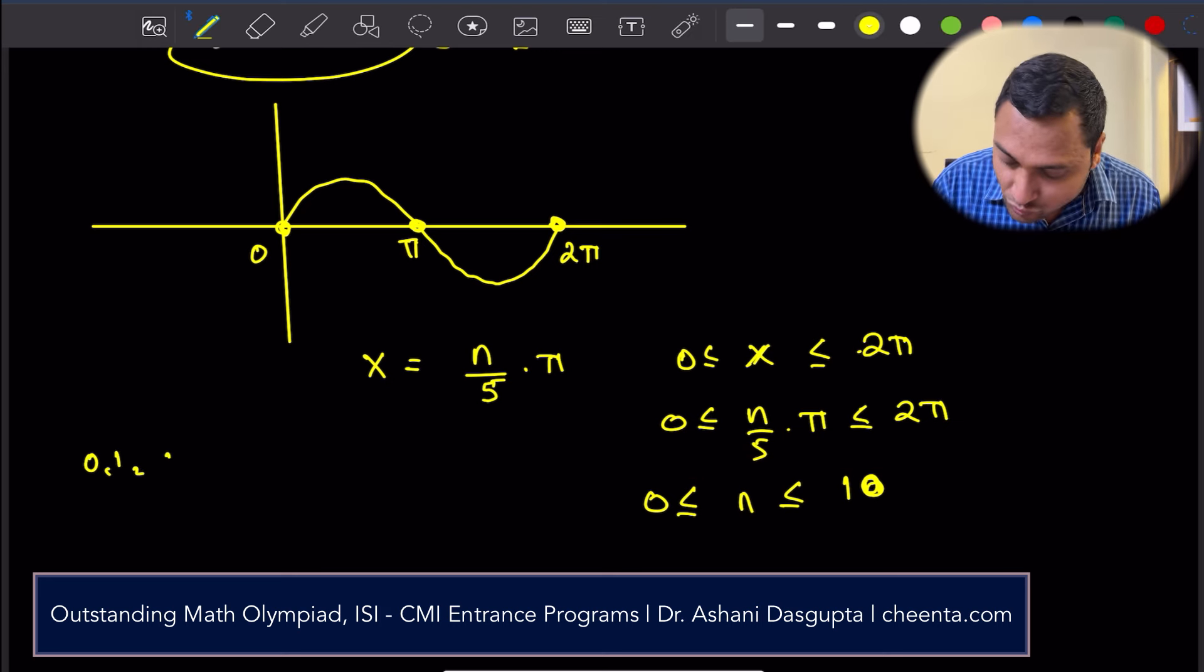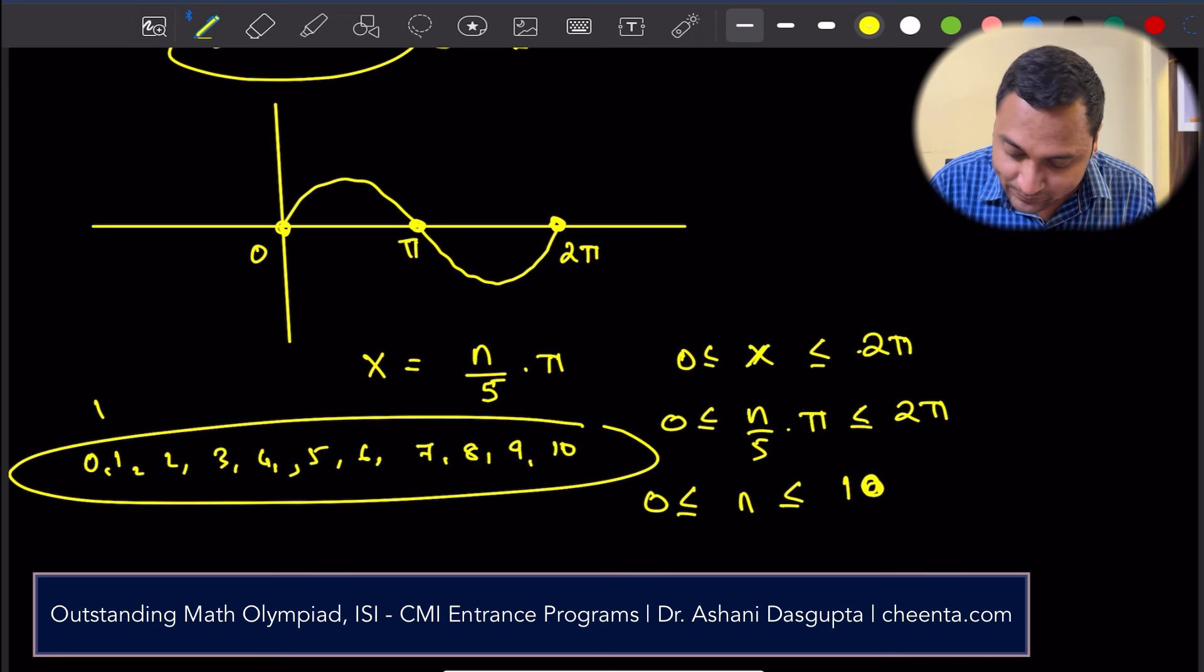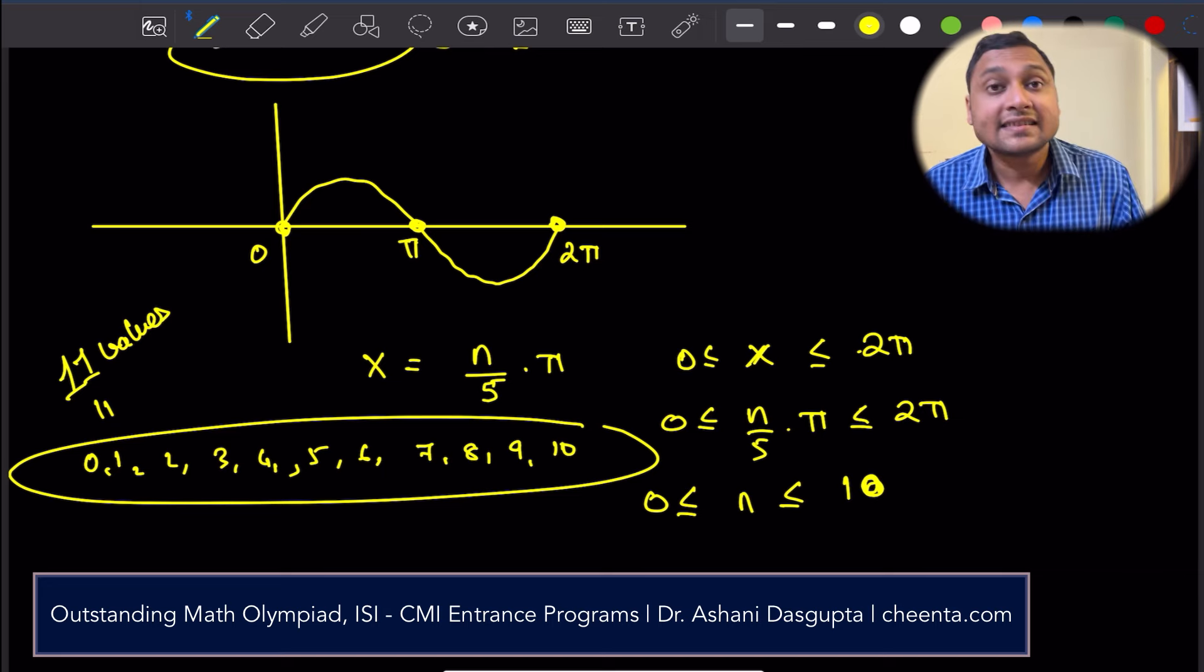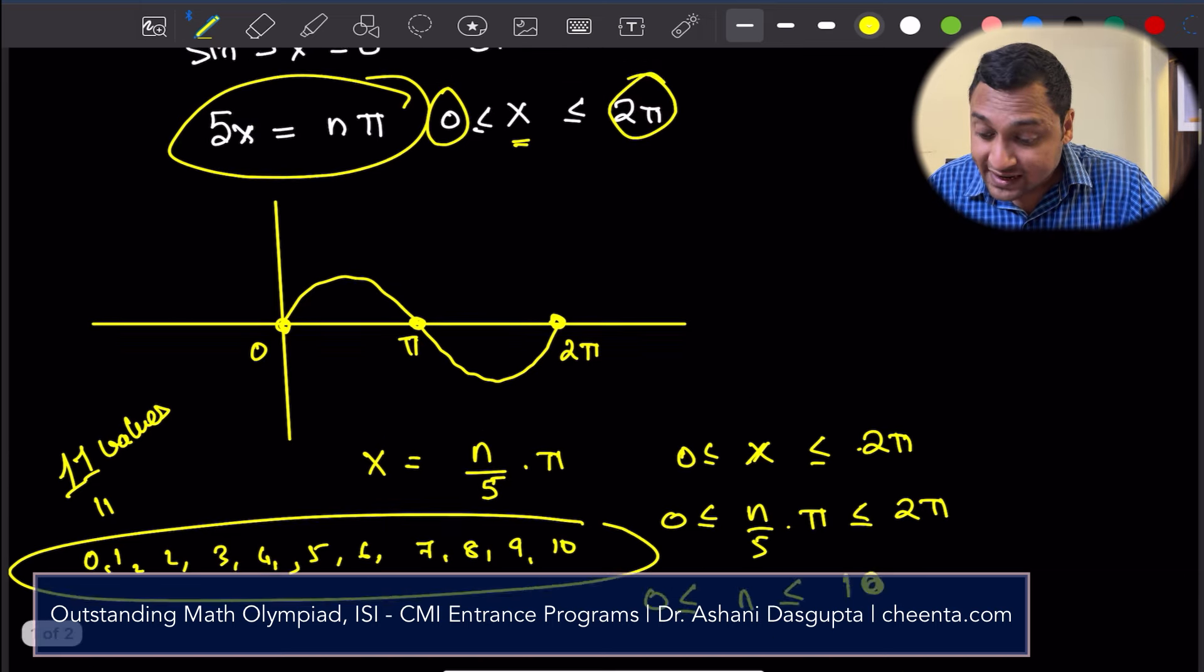That means the natural number needs to be between 0 and 10. So 0, 1, 2, 3, 4, 5, 6, 7, 8, 9, 10. 11 values work. 11 values. The same thing can be done for the cosine case.